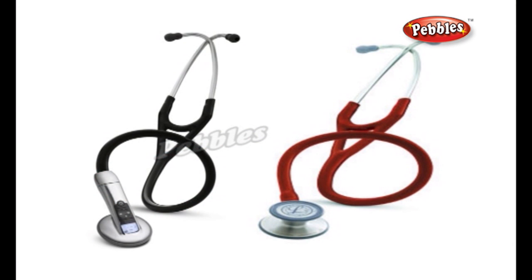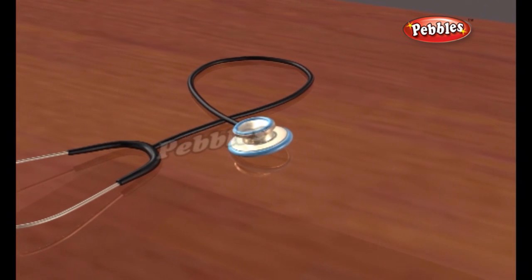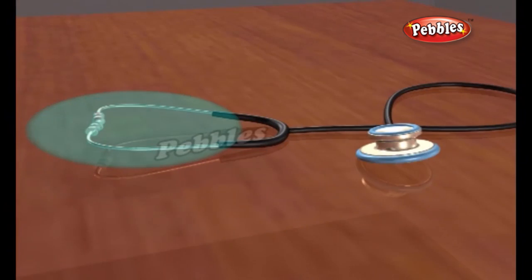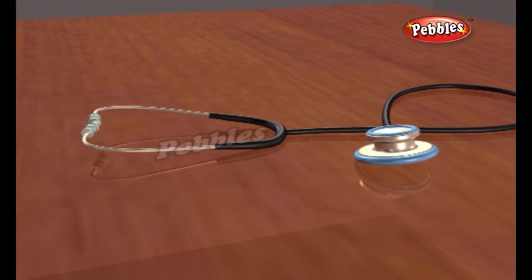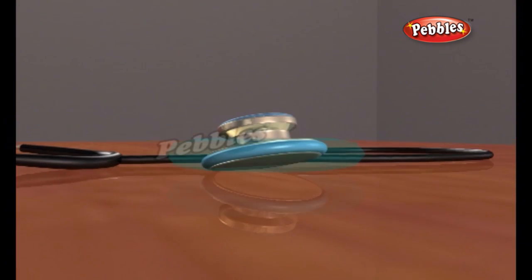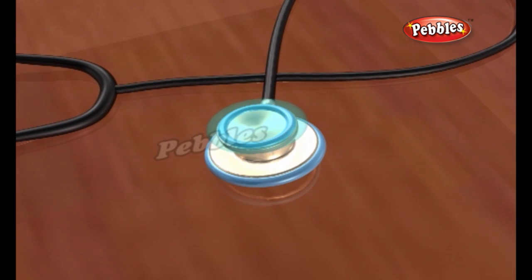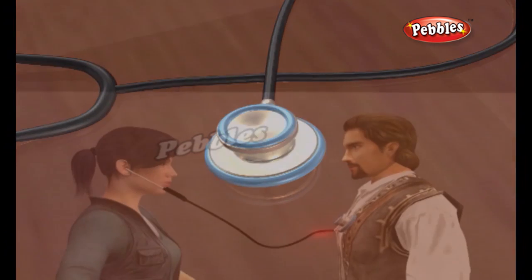There are two types of commonly used stethoscopes: electronic and acoustic. Acoustic stethoscopes consist of a chest piece, two hollow air-filled tubes, and the ear pieces. There are normally two sides to the chest piece: the diaphragm, a plastic disc, and the bell, a hollow cup.